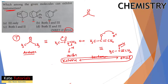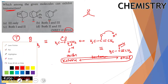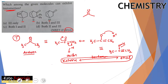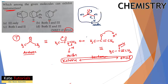Keto-enol tautomerism is shown by ketones, aldehydes, and molecules that have an alpha hydrogen. The alpha carbon is the carbon next to the ketone carbon, and it must have at least one hydrogen. That hydrogen is acidic due to resonance stabilization of the resulting carbanion.